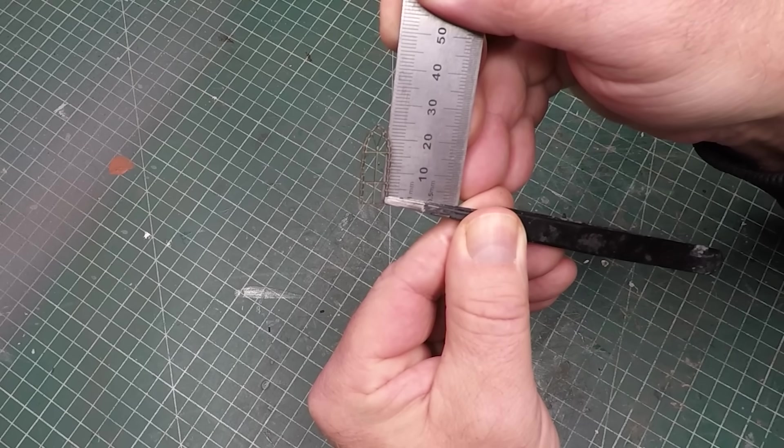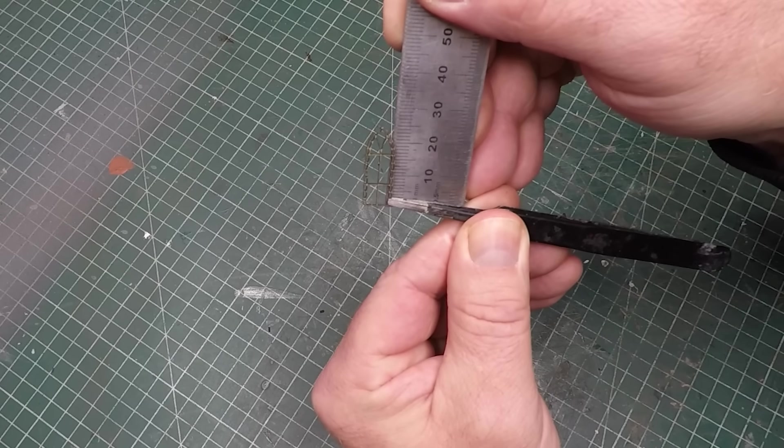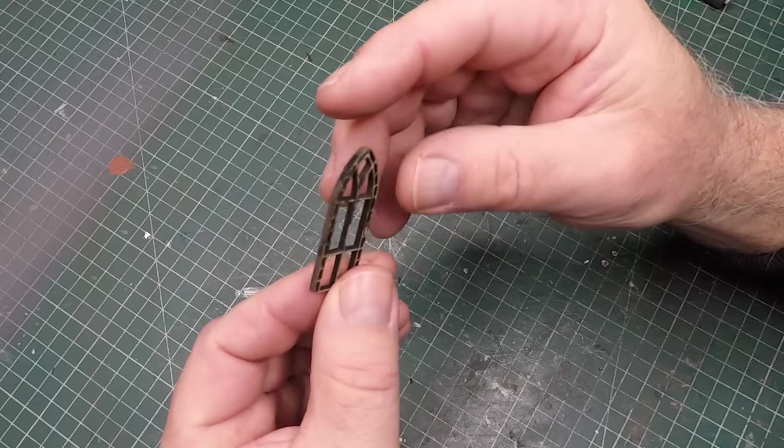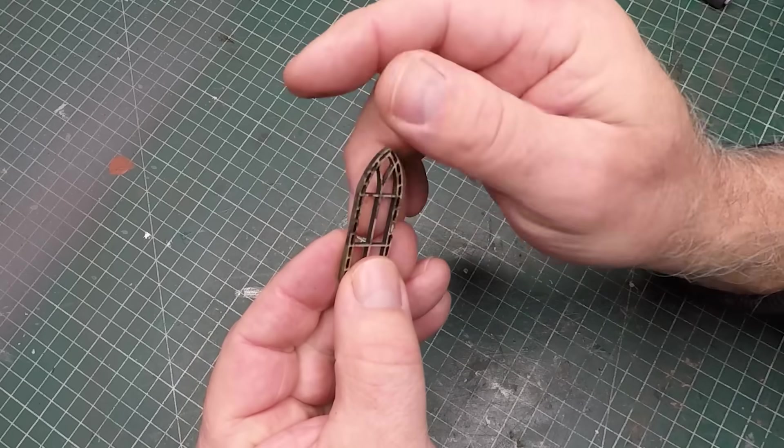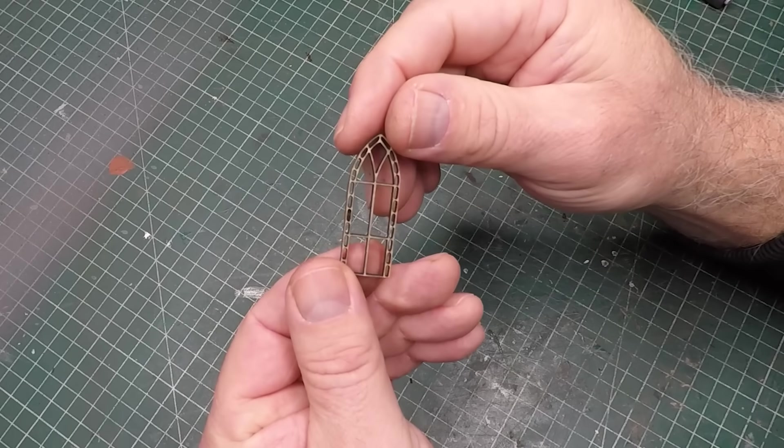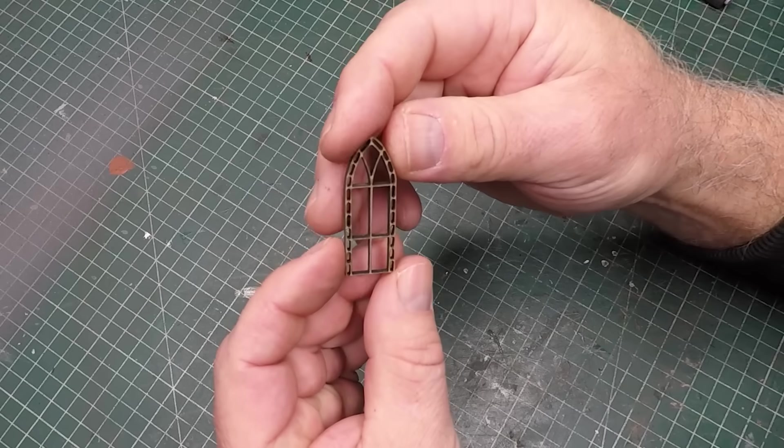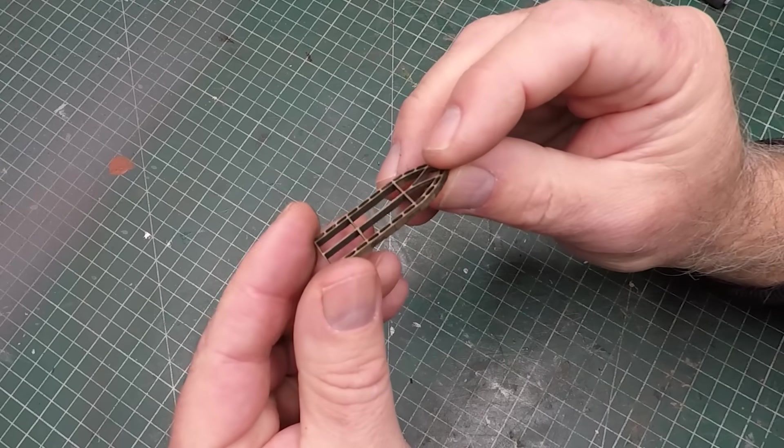This time around I went back to the original 40 mil in height and tried the thickest box board that I have, which is the 2.4 mil. Looks a bit thick, but still came up great.